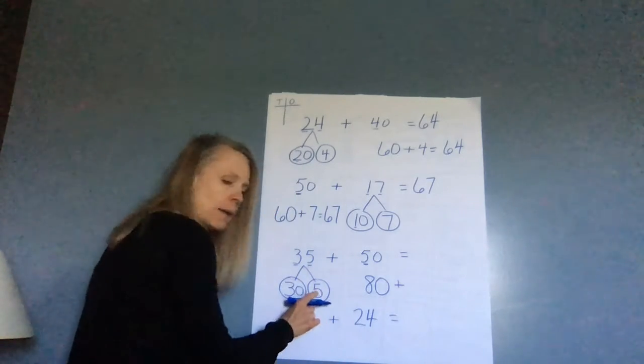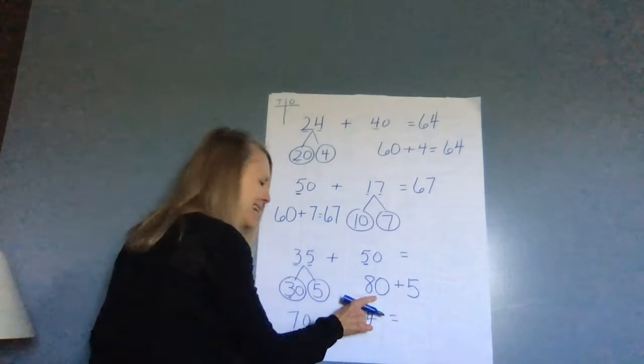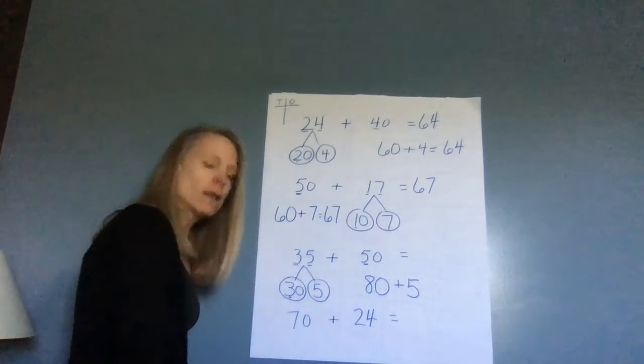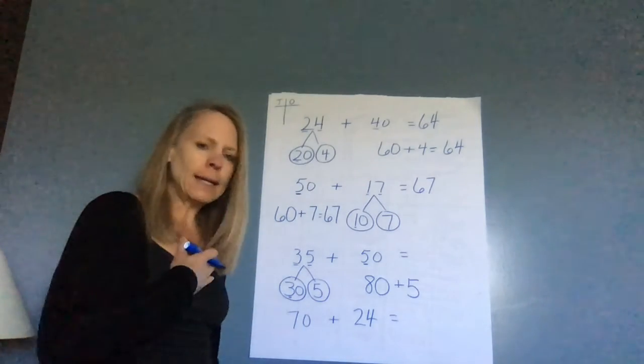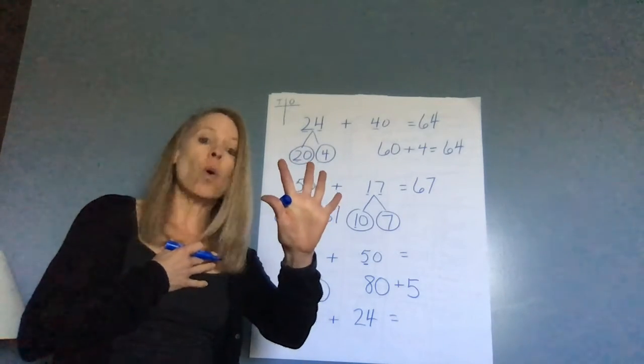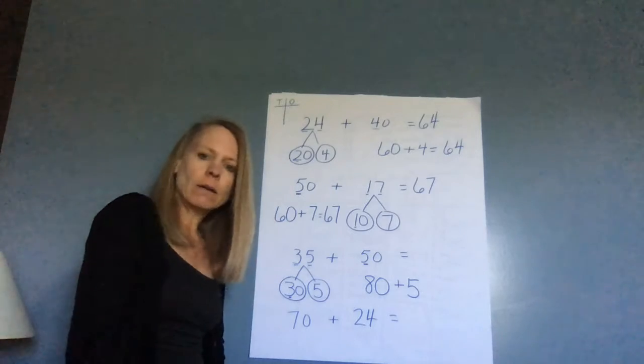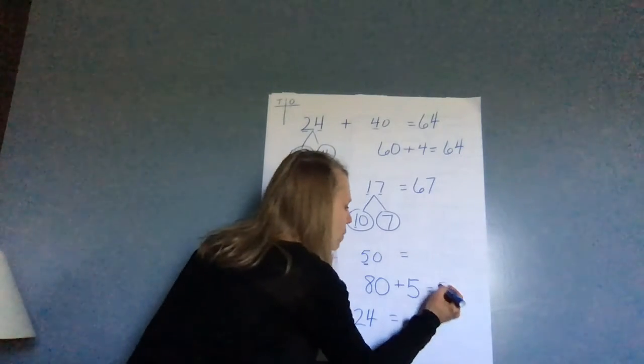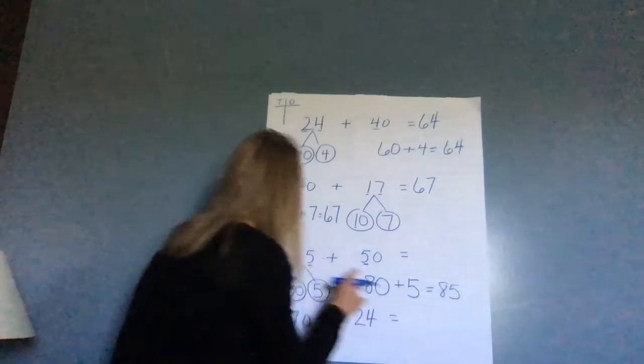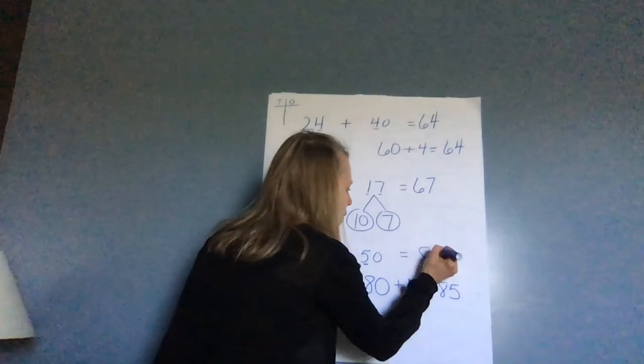Plus now I'm adding the ones. So 80 plus five more. If I need to, 80, 81, 82, 83, 84, 85, or put that five right on top of there. And so now I know that this is equal to 85. So 35 plus 50 is 85.